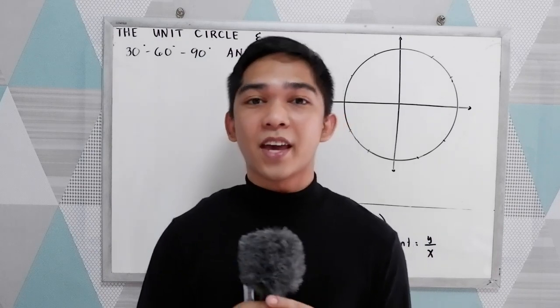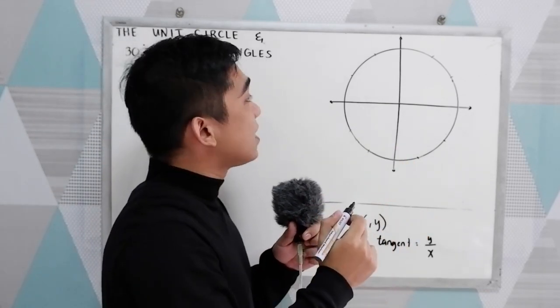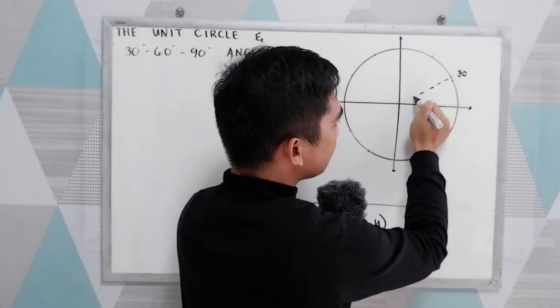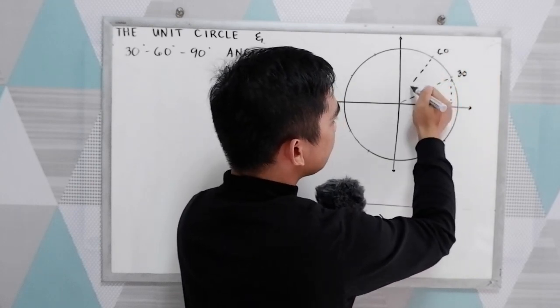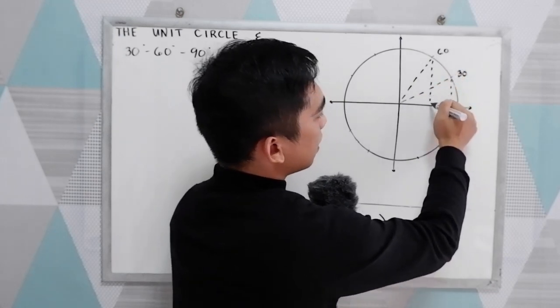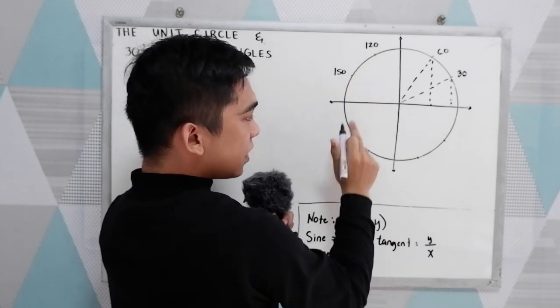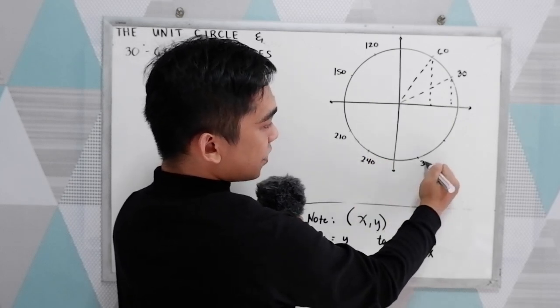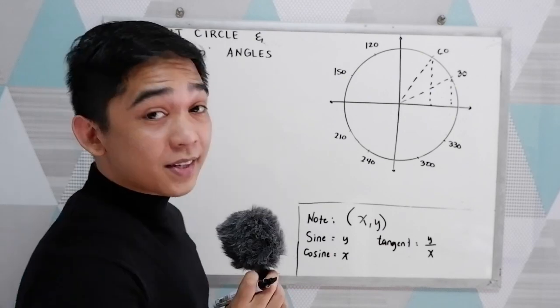Good day everyone. Today we will be discussing the unit circle and the 30, 60, 90 degree angles. So in our coordinate plane, let us locate the 30, 60, 90 angles. We have the 30 — this will be our triangle — 60, this will be our triangle. Next we have 90, 120, 150, 180, 210, 240, 300, and 330. So those are the angles that will form 30, 60, 90 degree angles.